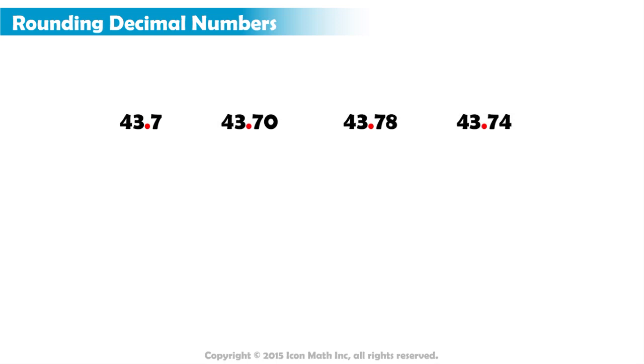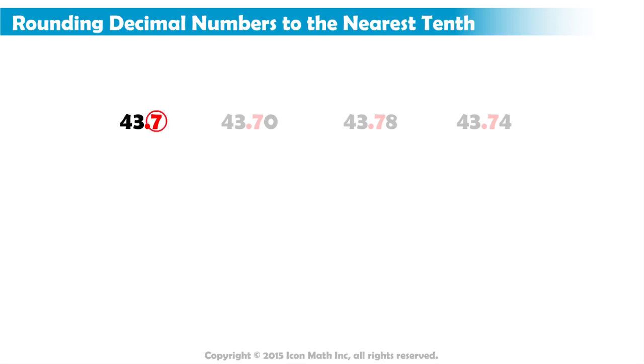Let's round the following numbers to the nearest tenth. 43 and 7 tenths has one decimal place. It is already rounded to the nearest tenth, so we don't need to change anything here.